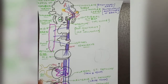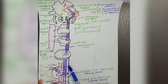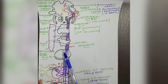Just as the dorsal column pathway is called the medial lemniscus pathway, the anterolateral spinothalamic pathway is called the spinal lemniscus pathway, because these fibers form the spinal lemniscus as they ascend. The three fiber groups — the lateral spinothalamic pathway, the anterior spinothalamic pathway, and the spinotectal pathway — come together and create a single tract called the spinal lemniscus at the medulla oblongata level.